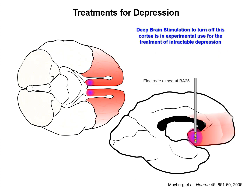For those who are not helped by medication — in other words, those who have intractable depression — deep brain stimulation to turn off Brodmann's area 25 is in experimental use. This shows an electrode aimed at this area that can electrically shut off the activity of this region.